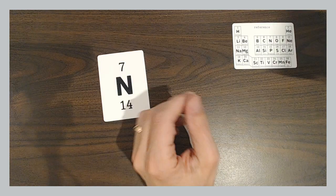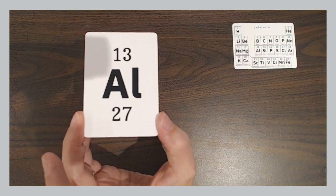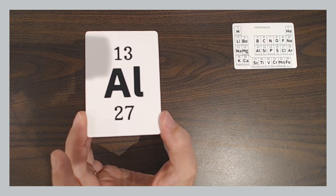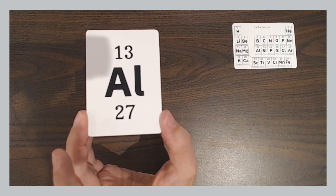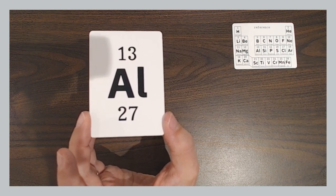If we take another one, for example, for aluminum, you have 13 protons. Atomic mass is 27. So the number of neutrons would be 27 minus 13, or 14.